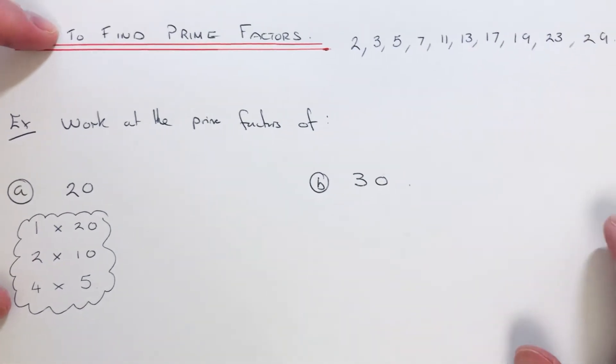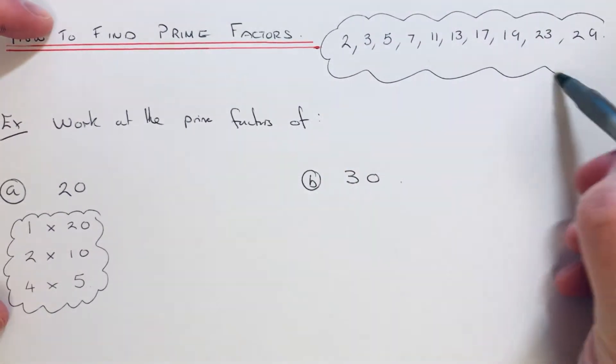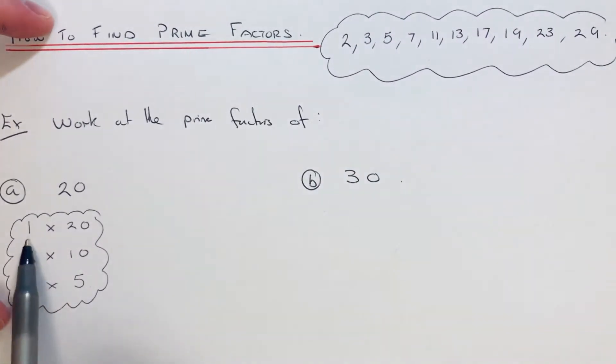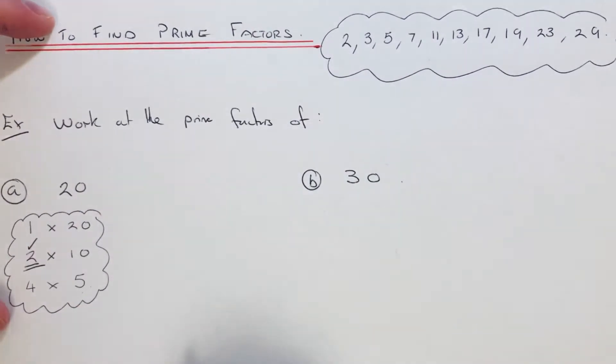Which ones of these factors are prime? We've got 2, that's definitely a prime number, and we've also got 5. So the only prime factors of 20 are 2 and 5.